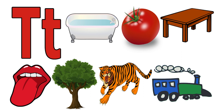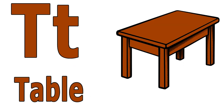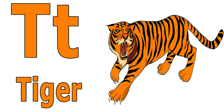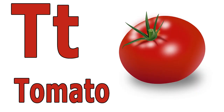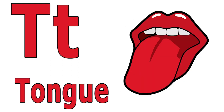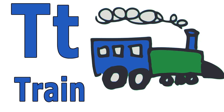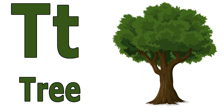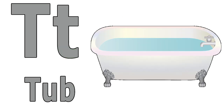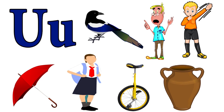Let us start with T. T for table. T for tiger. T for tomato. T for tongue. T for train. T for tree. T for tub. Let us start with U.